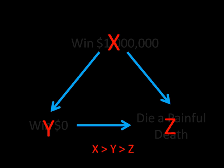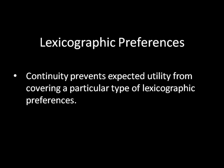To end things here, I want to talk about one last thing — one issue with continuity — and that's what we call lexicographic preferences. Continuity actually prevents expected utility from working with a very specific type of lexicographic preference. In the next video, we'll talk about what lexicographic preferences are and what this particular type is that ruins expected utility theory. So join me for that video, and I will see you then.